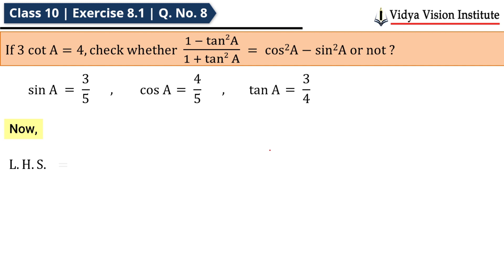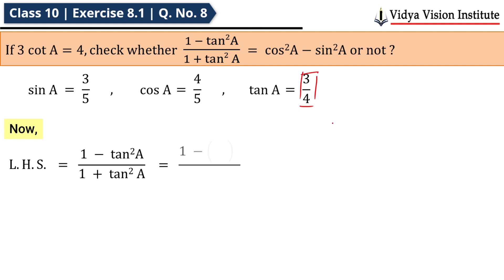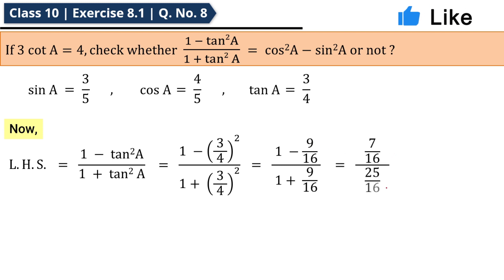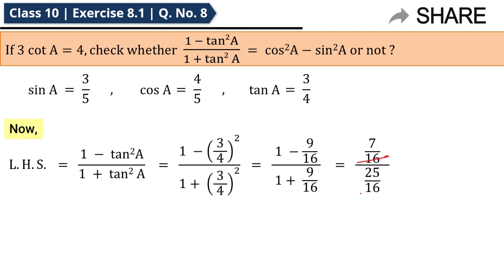LHS = (1 - tan²A)/(1 + tan²A). The value of tan A is 3/4, so it becomes (1 - (3/4)²)/(1 + (3/4)²). (3/4)² = 9/16. Calculating: numerator = 7/16, denominator = 25/16. The 16s cancel, giving LHS = 7/25.